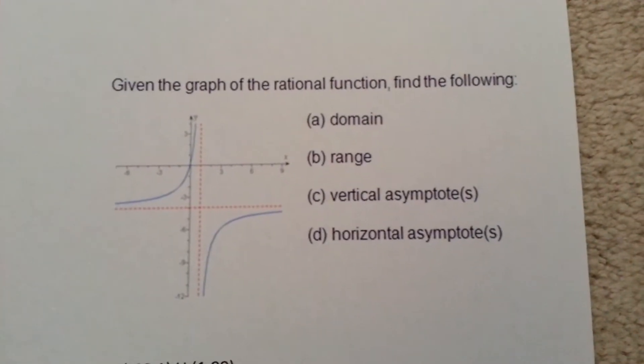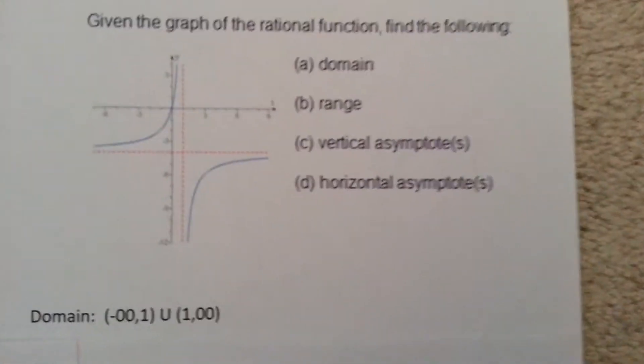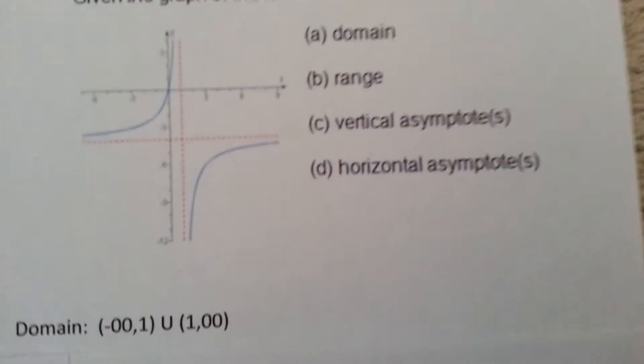The question I'm doing is: given the graph of a rational function, find the following: domain, range, vertical and horizontal asymptotes.